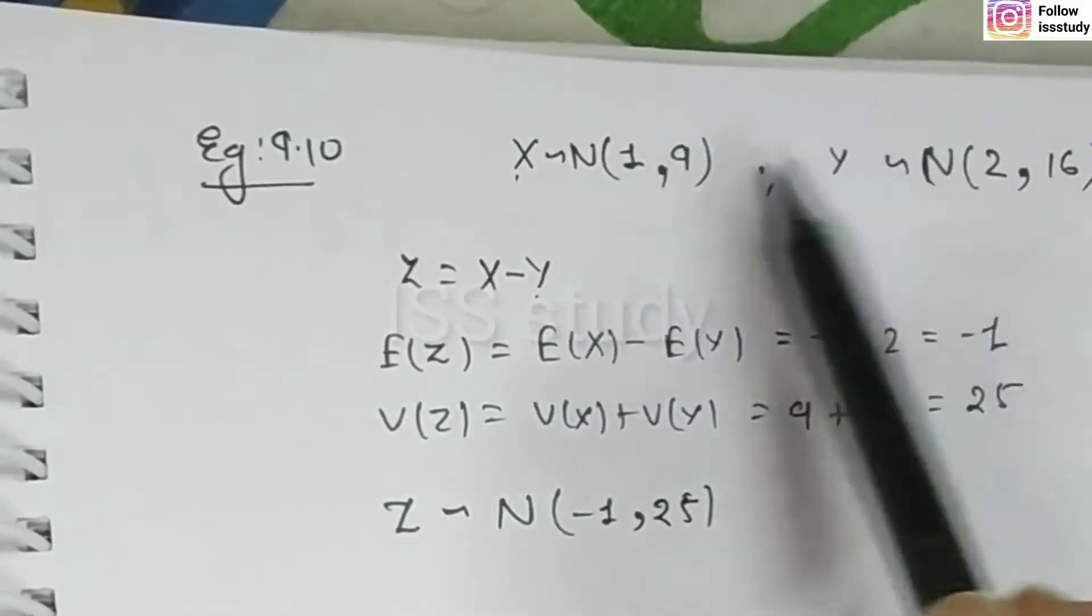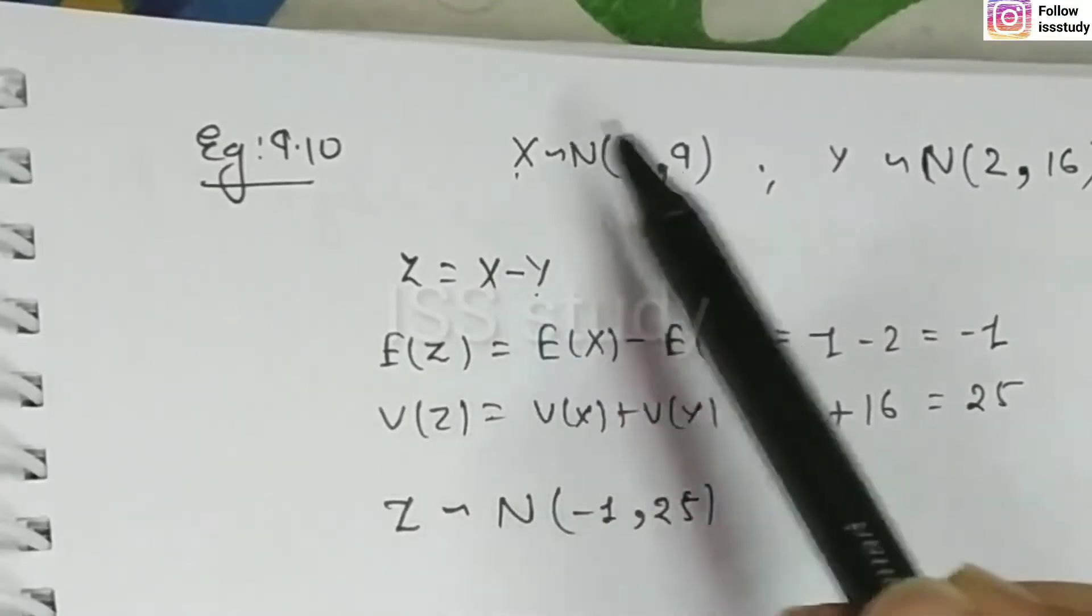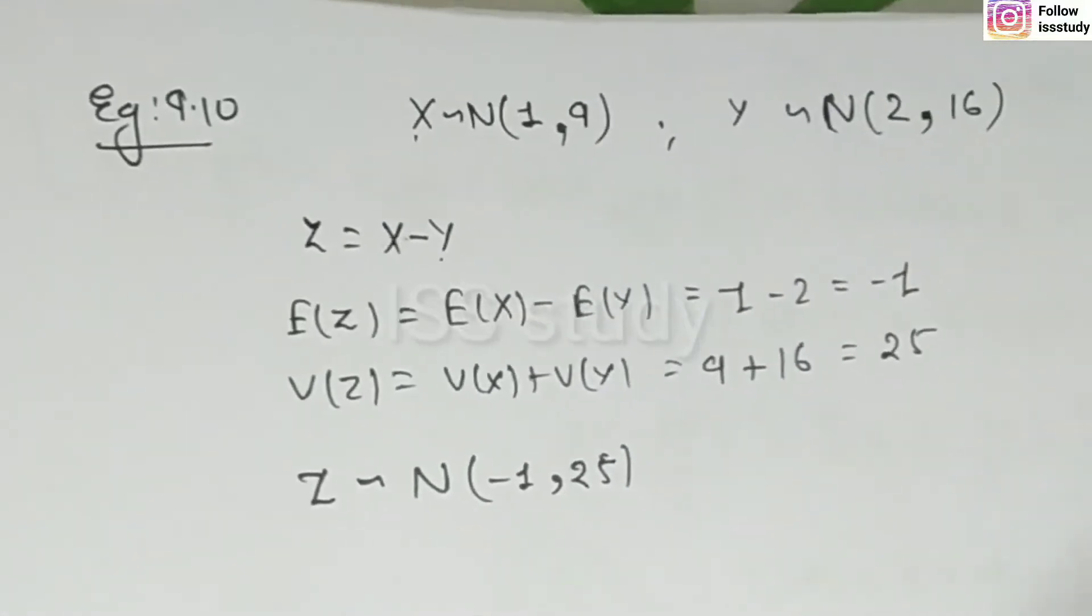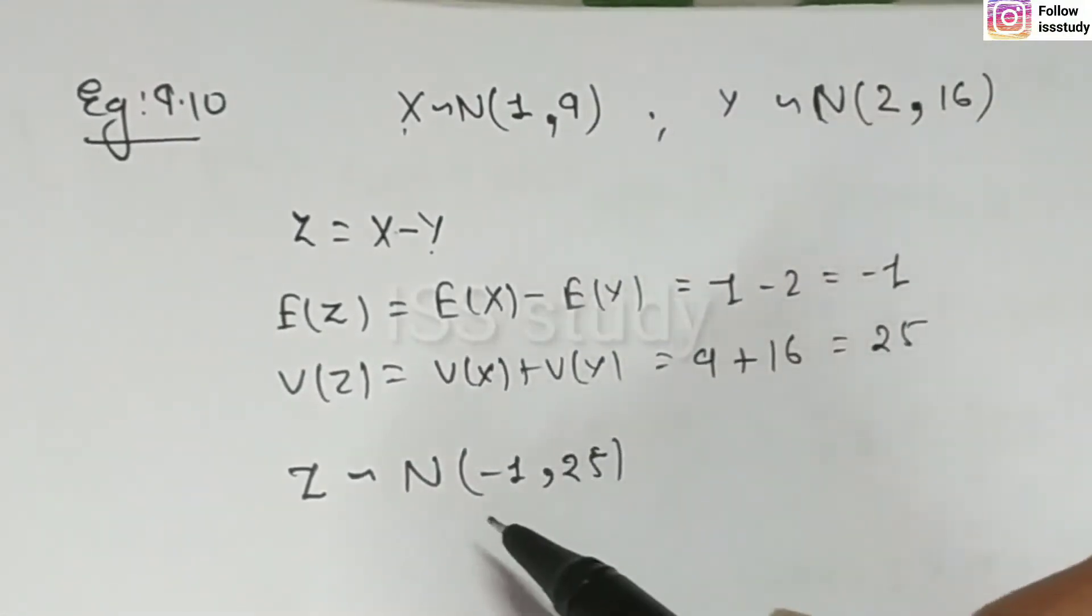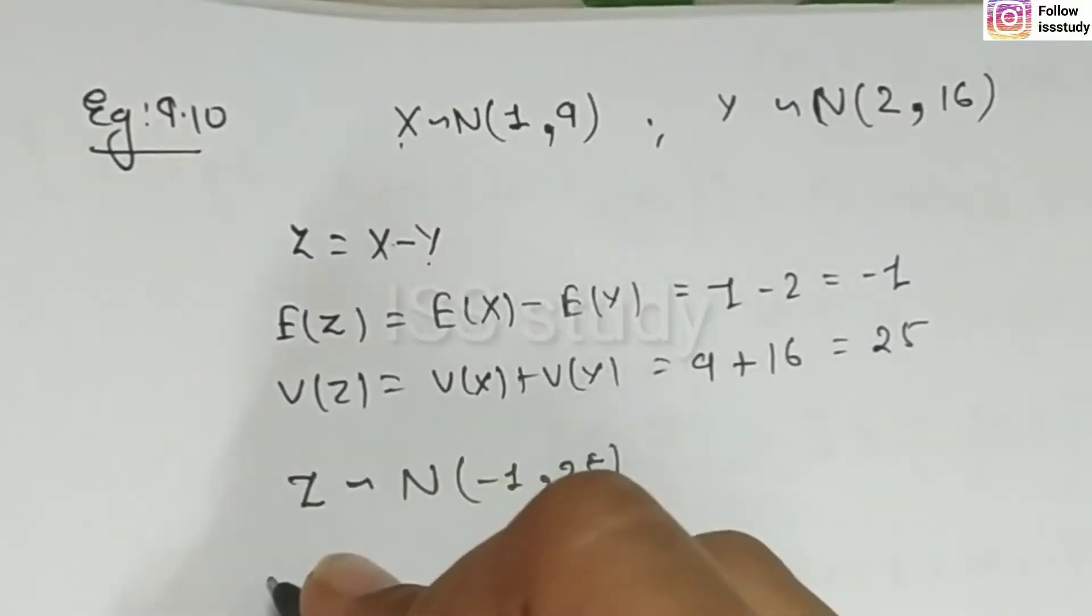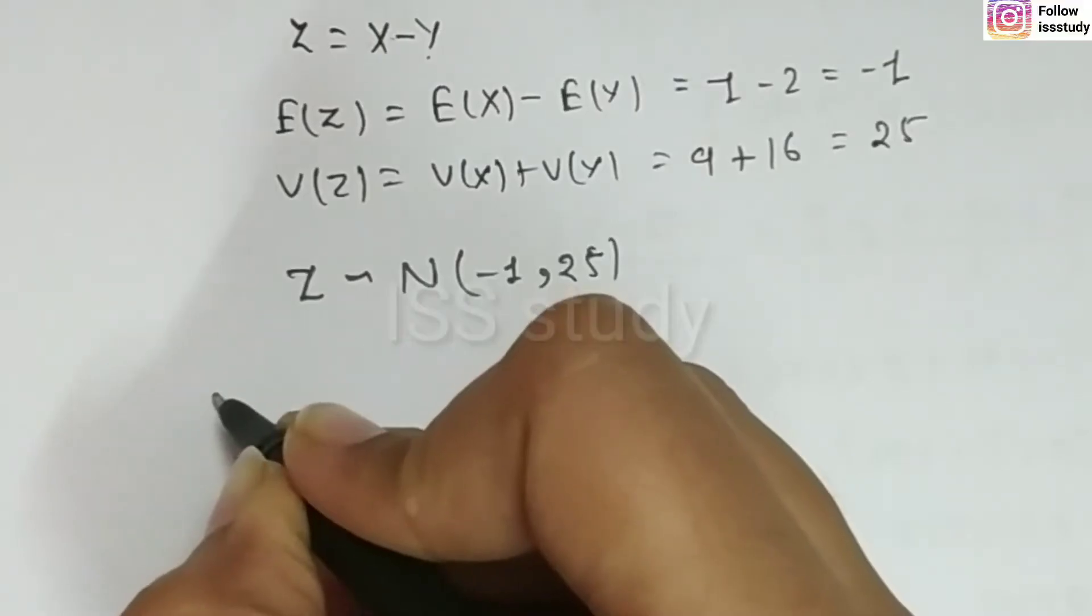Because, we know that if we have two random variables that follow the normal distribution, then the sum or subtraction will also follow the normal distribution. So, this is how we know. Now, we can easily write this PMF here.